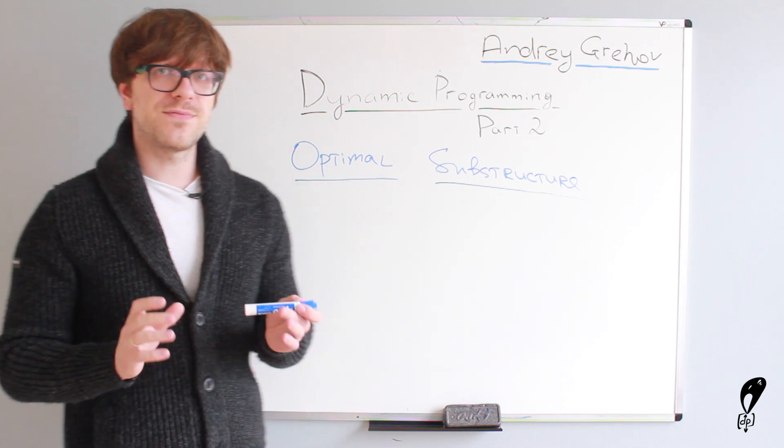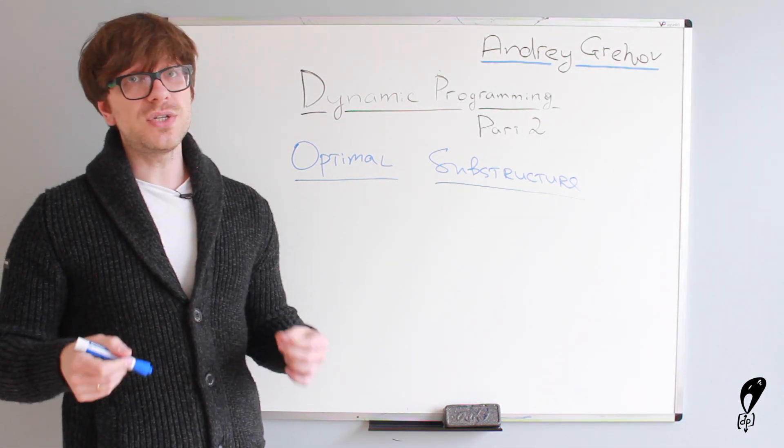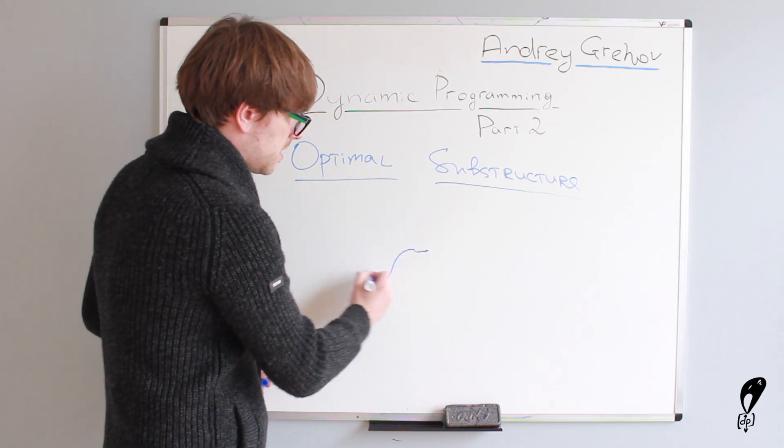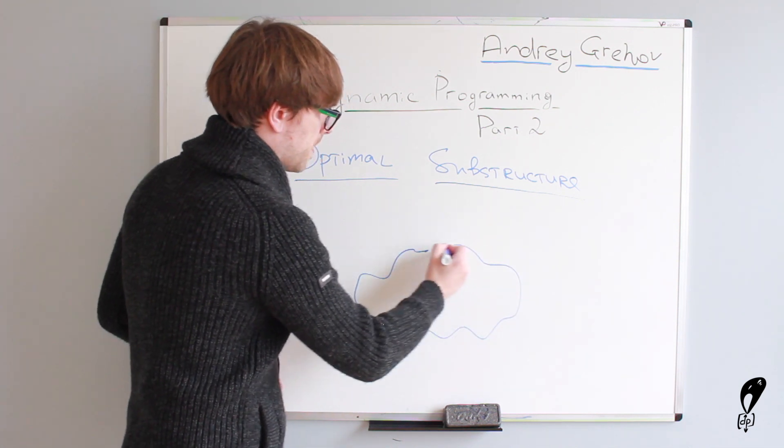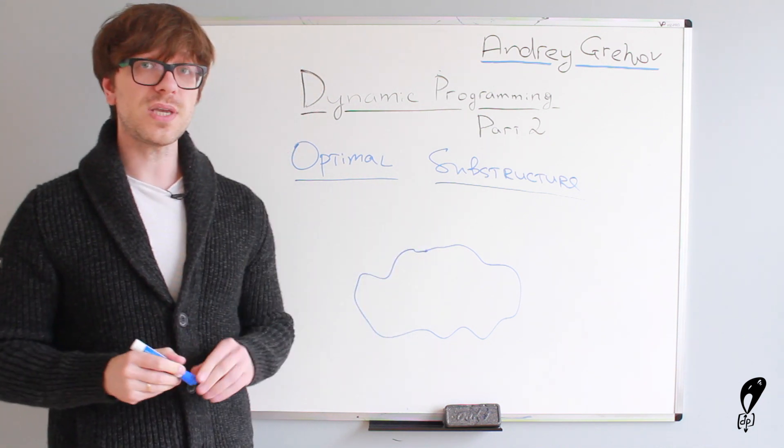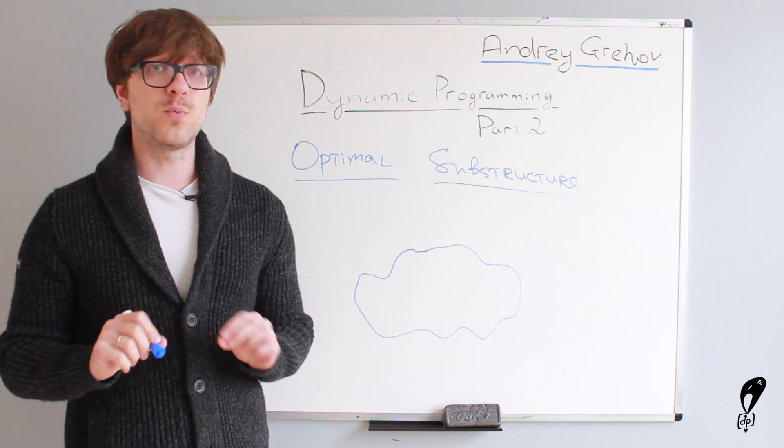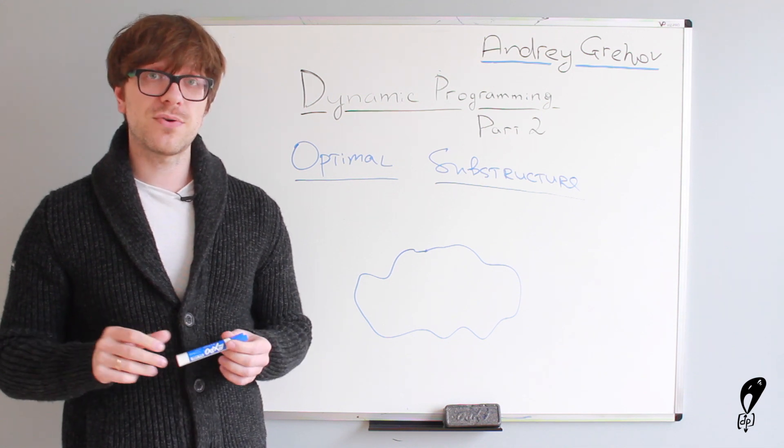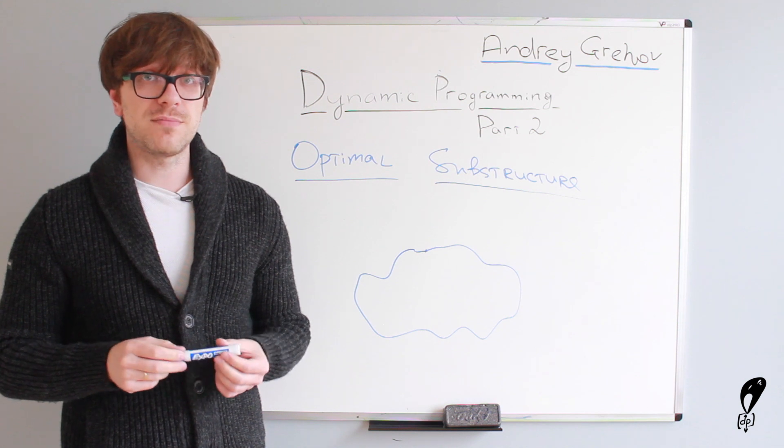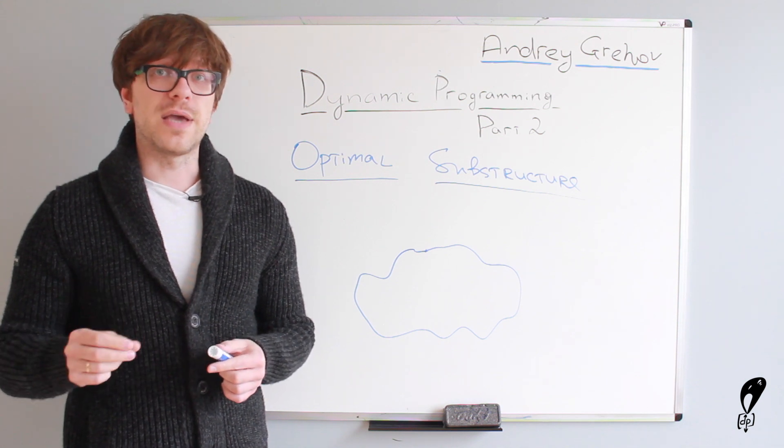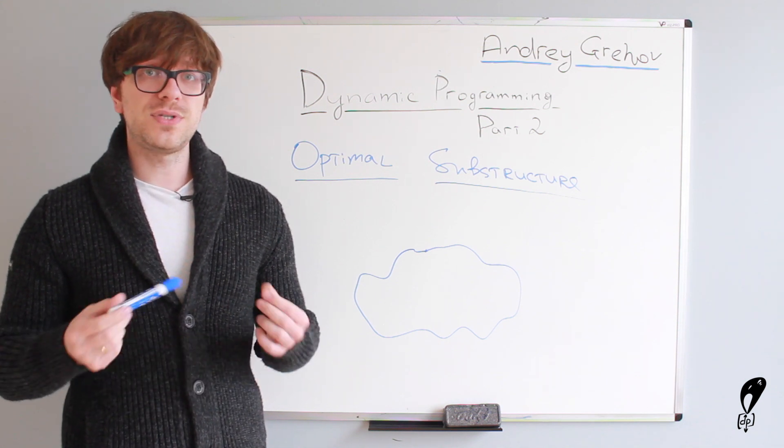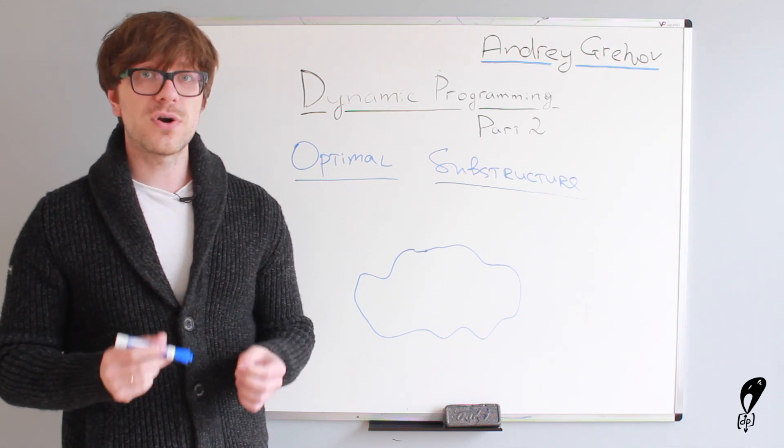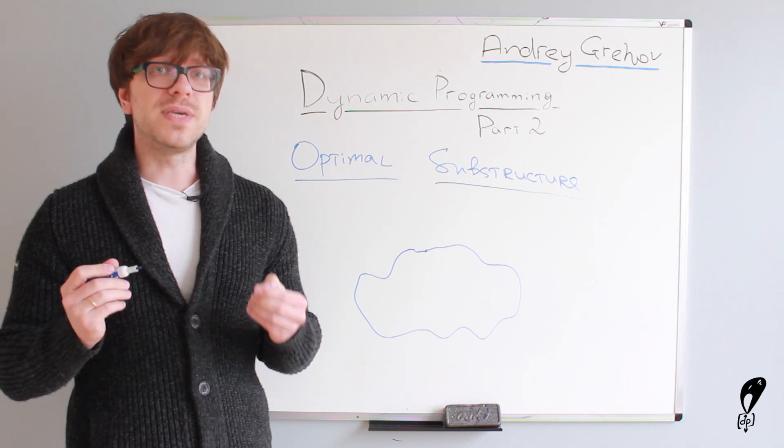Okay, as a very simple example, let's imagine that we need to solve some abstract problem. So, this is our abstract problem. It's a complex problem and we don't know how to solve it at once. But what we do know is that generally complex problems can be solved step by step. So, what do we do? Instead of solving the entire problem at once,